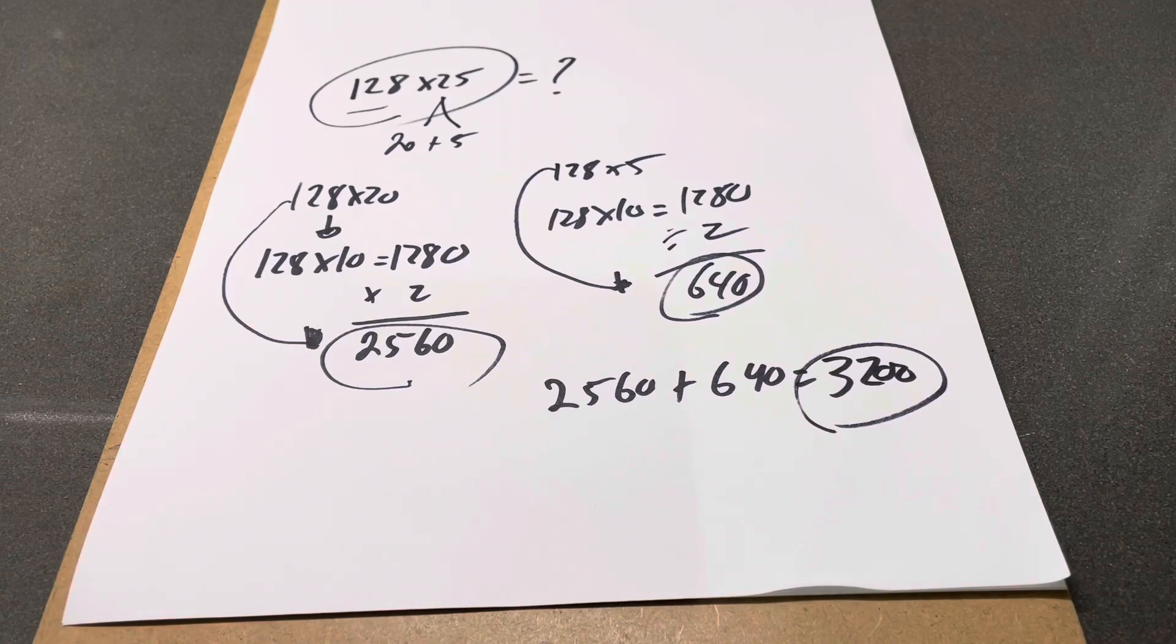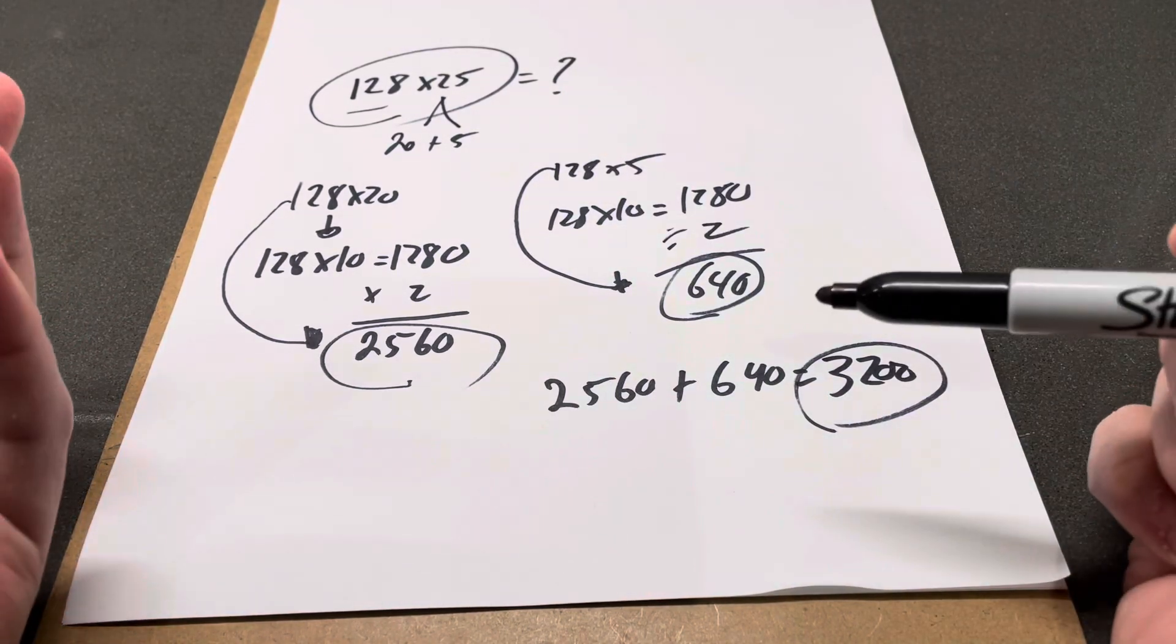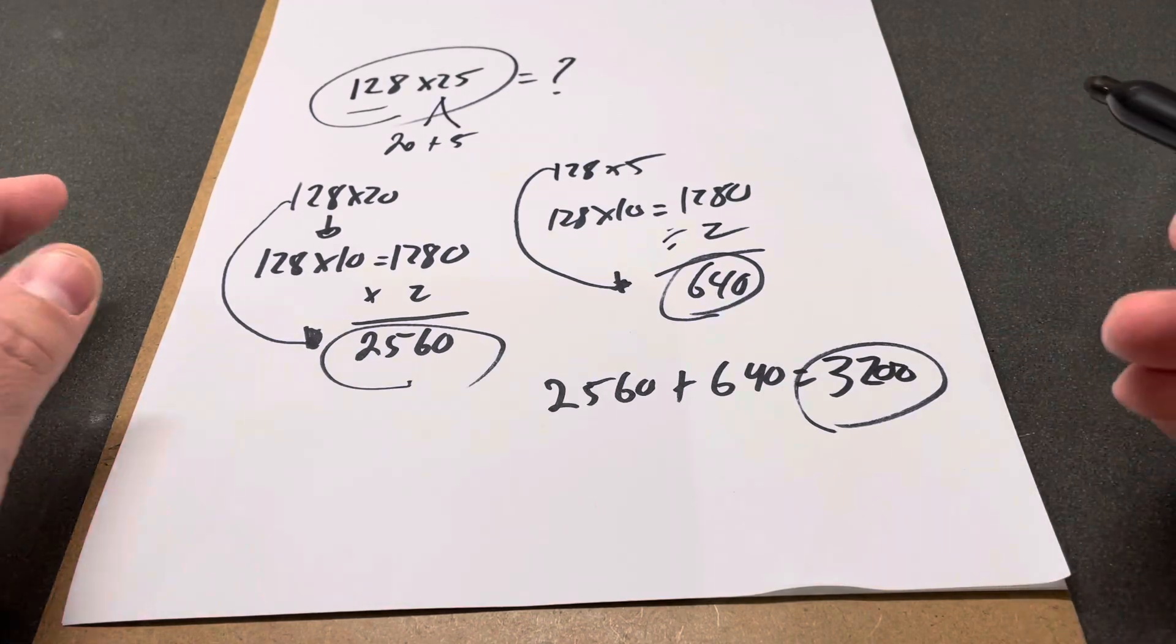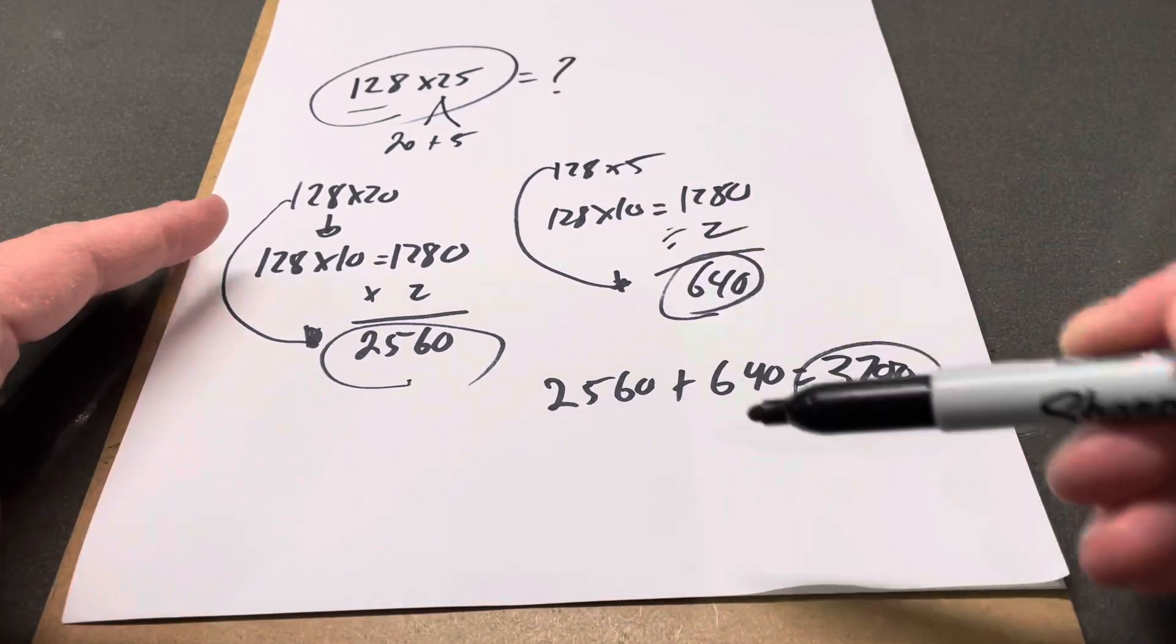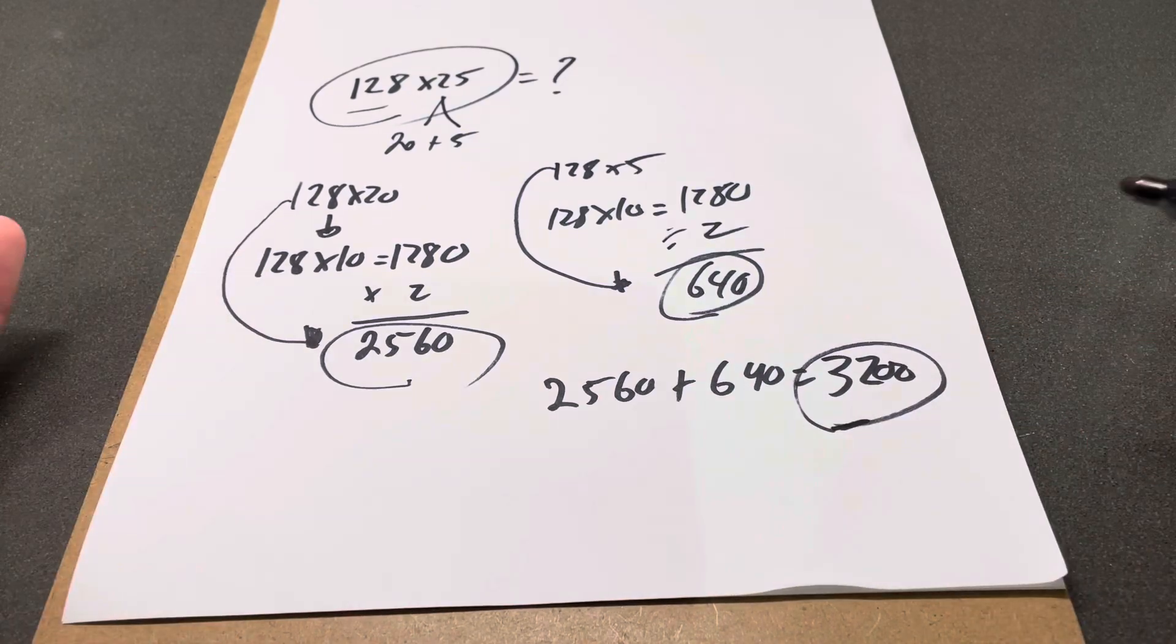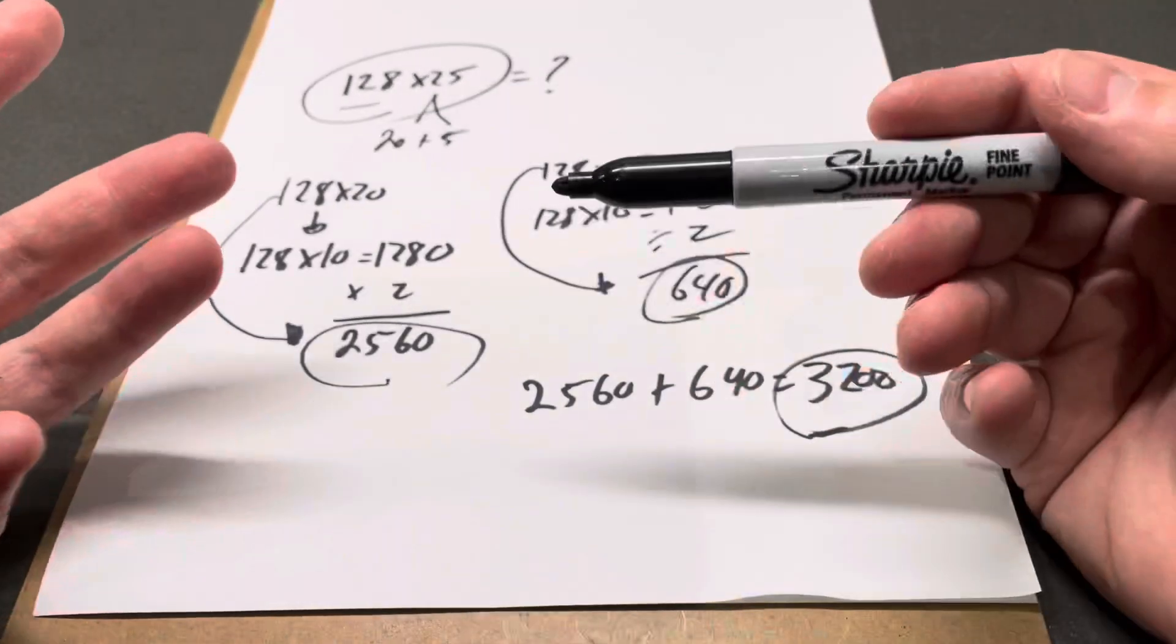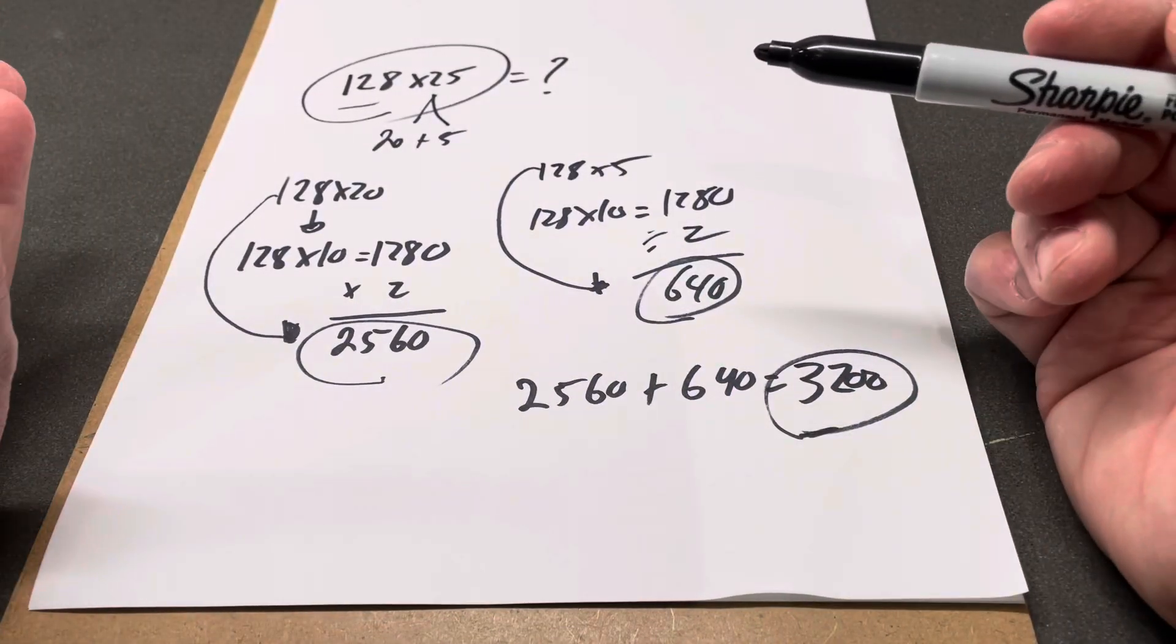This is what I would do, and to do this in my head would probably take me about 30 seconds or so. When I'm showing you, every step takes much longer, but when you learn to do this in your head, it doesn't take long. You know, 128 times 10 is 1280, times 2 is 2560 - you can do that in a matter of 15 seconds maximum.